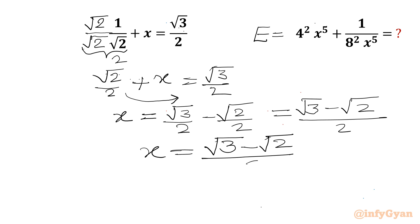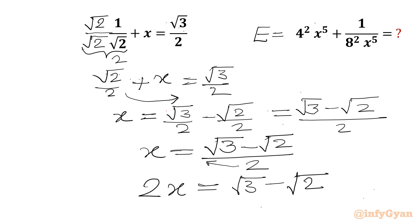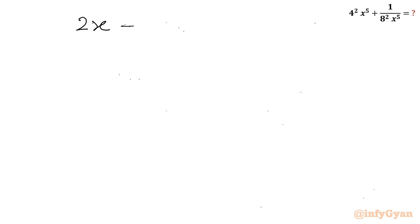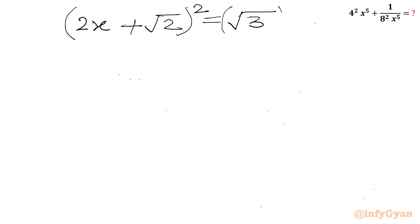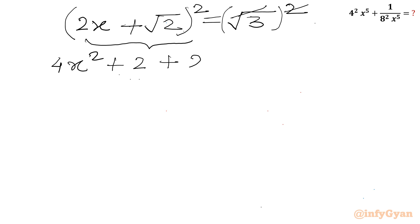Now I will cross multiply by 2, so 2x will be equal to √3 minus √2. Now let's take this minus √2 to the LHS, so it will become 2x plus √2 equal to √3. Now I will consider squaring both sides — the square root and square will cancel. Applying (a + b)² we can write 4x² + 2 + 4√2·x equal to 3.